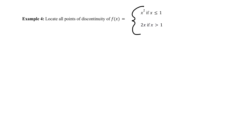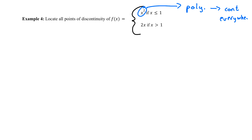The first thing I want to do is look at the individual pieces of this piecewise function. Here we've got x squared. What type of function is x squared? It's a polynomial, and polynomials are continuous everywhere. So everywhere that x squared is defined it must be continuous — no points of discontinuity there.